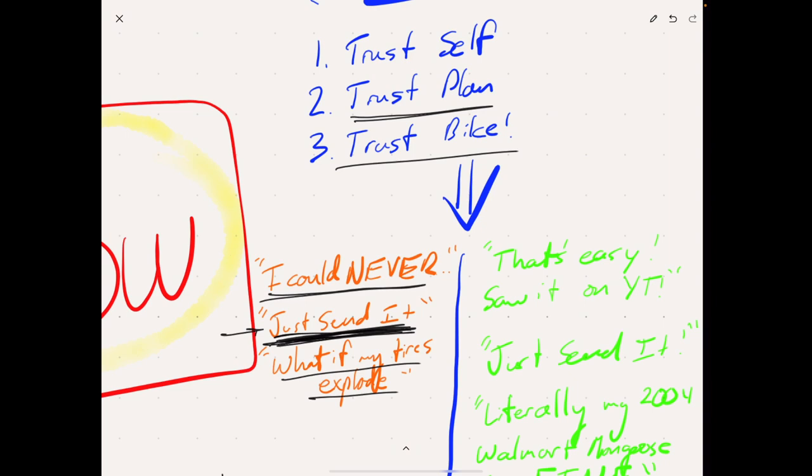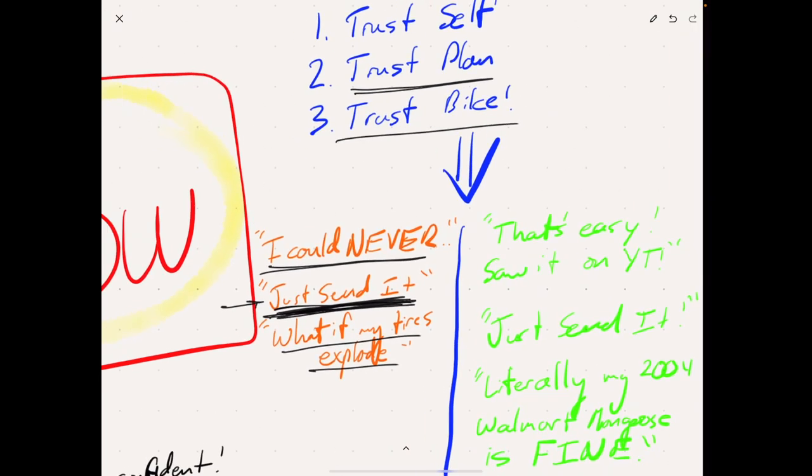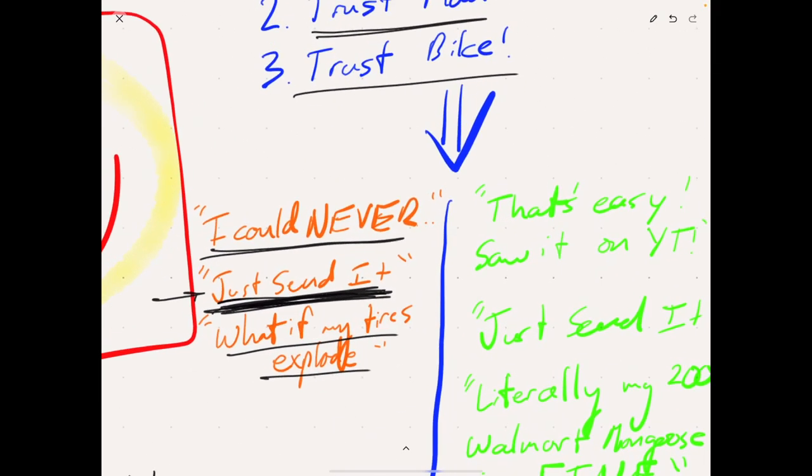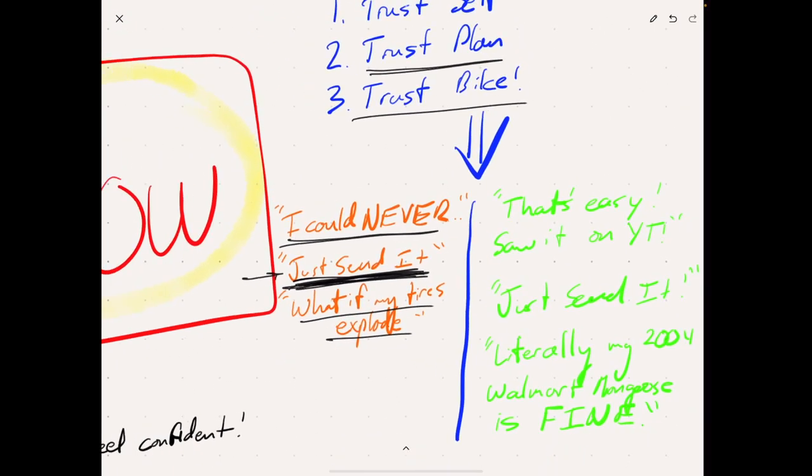Now there's also some overconfident beliefs that are not in alignment with the three beliefs that we need to have flow. These are overconfident beliefs based on false pretenses, or they're just based on, you know, being a newbie sometimes. So no offense to anyone here. If you're thinking this, I'm just letting you know that these are some things that will keep you out of flow.